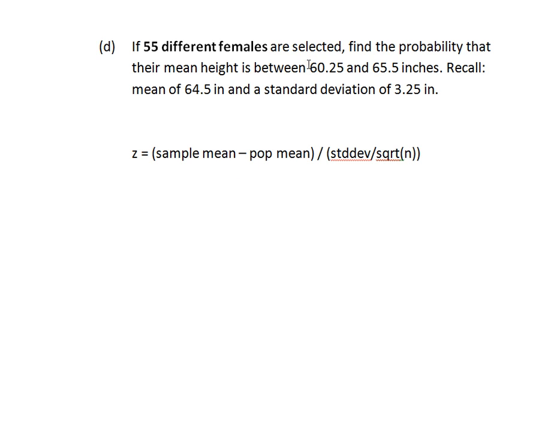We want to see what's the probability that this entire group of 55 females are between these two values. We're going to take the smaller of the two values, 60.25, subtract the mean, which is always 64.5. We're going to divide this by the standard deviation, 3.25. But we have to divide the standard deviation by the square root of n, which is 55. That's the size of our sample. That's going to give us our Z value for the smaller group. And that comes out to be minus 9.70. It's a very tiny Z value. That's so many standard deviations from the mean that it almost doesn't exist.